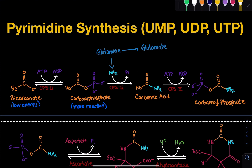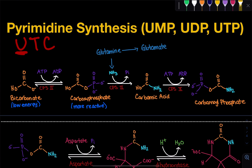What is a pyrimidine? A pyrimidine is actually a single ring structure. In biochemistry and biology, there are pyrimidines and purines. Purines are two ring structures, whereas pyrimidines are one ring structures, and they're found in DNA and RNA. Specifically, pyrimidines include uracil, thymine, and cytosine, where uracil is found in RNA, thymine is found in DNA, and cytosine is found in both RNA and DNA.